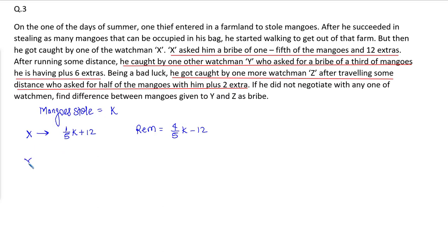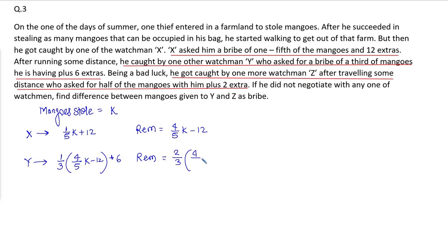Now for watchman Y: the mangoes given to Y as a bribe are one-third of the remaining mangoes, that is one-third of (4/5 k minus 12), plus 6 mangoes extra. So how many mangoes are remaining after this? If I give one-third, two-thirds remain, that is two-thirds of (4/5 k minus 12), and I give 6 extra, so I subtract 6.